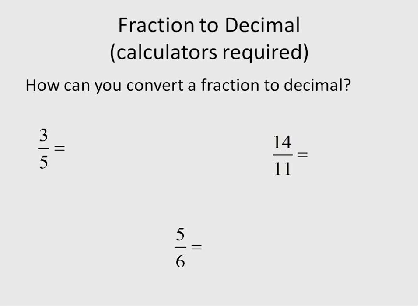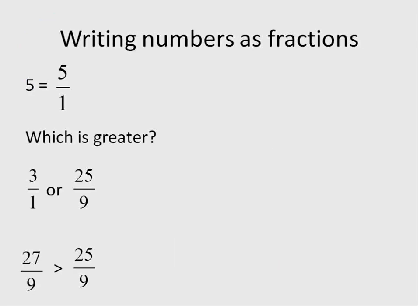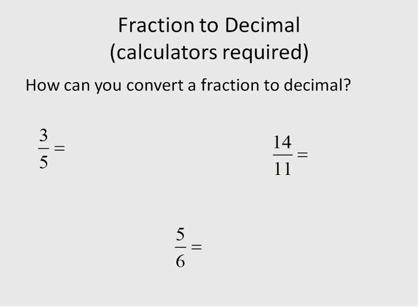Also, when you're converting a fraction to a decimal, we'll talk a little bit about some other things you can do with rational numbers. When we have a rational number like 3 over 5, 14 over 11, 5 over 6, we can convert those into a decimal simply by dividing the numerator by the denominator. So 3 divided by 5, 14 divided by 11, 5 divided by 6. This one here is 1.27 and the 7s continue on. This is 0.833 and the 3s continue on. This is 0.6.